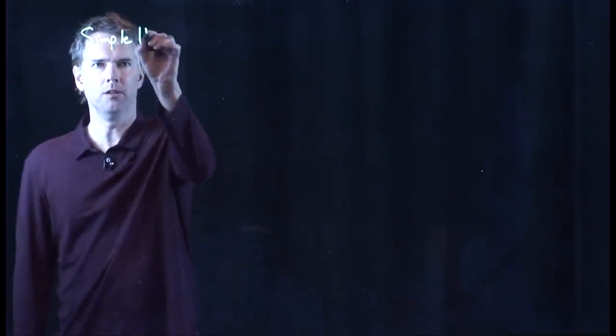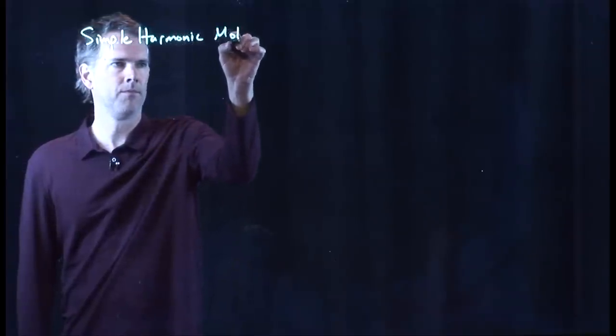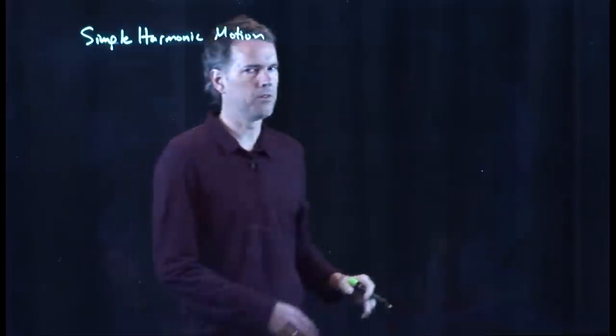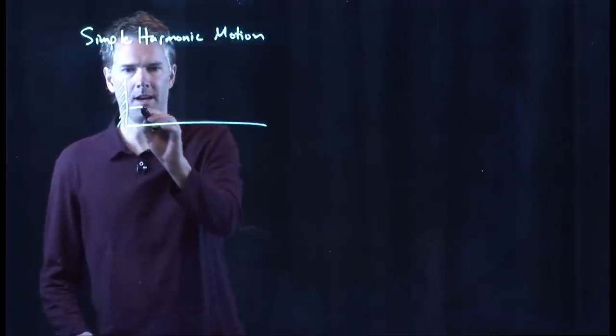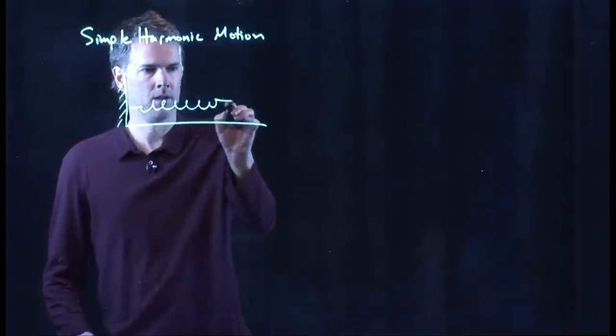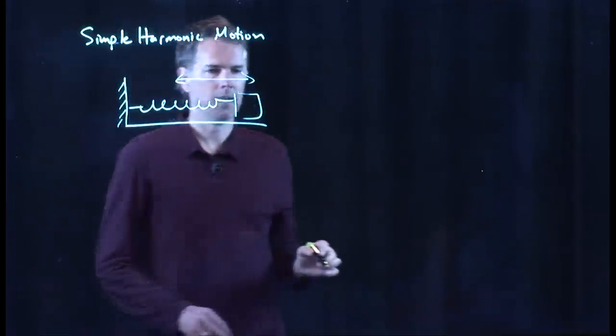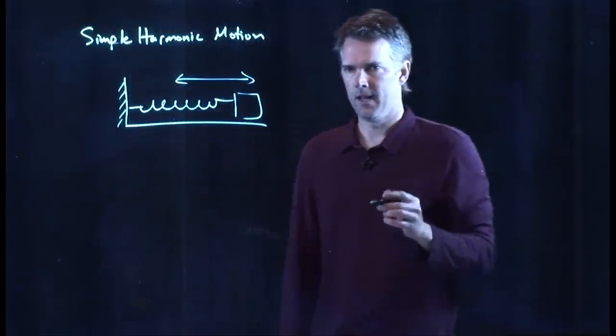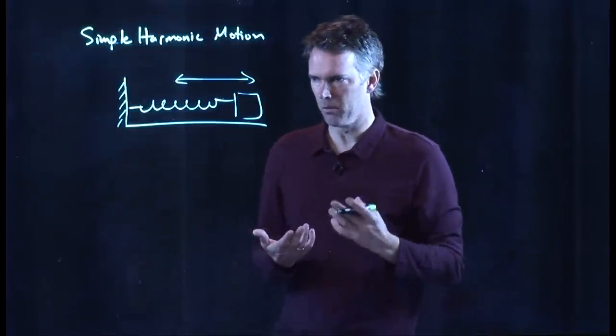Let's see if we can derive simple harmonic motion from Hooke's Law. And we said that we're going to take the problem where we have a mass on a spring. Let's tie it to the wall. And we know what that thing is going to do as I stretch it out and release it. It's going to go back and forth.